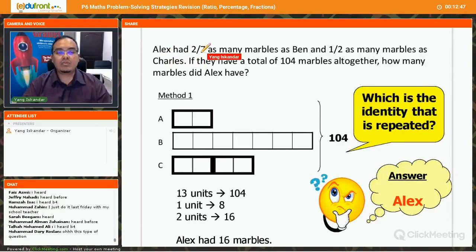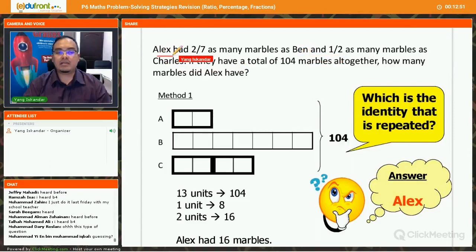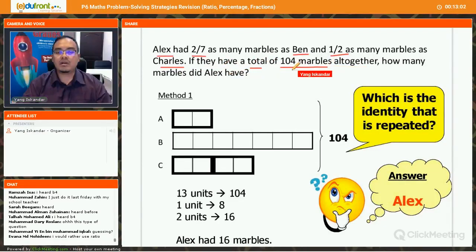Let's look at this question. Alex had 2/7 as many marbles as Ben. Alex has 2/7 as many marbles as Ben and 1/2 as many marbles as Charles. If they have a total of 104 marbles altogether, how many marbles did Alex have? Alright, so first of all, let's analyze the first clue given to you here.